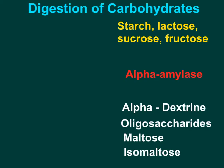In this video I will be explaining some important points about digestion of carbohydrates. Carbohydrate digestion begins in the mouth. The main carbohydrates in our diet are starch, which is a polysaccharide from plant sources, lactose from milk and milk products, sucrose from table sugar, and fructose from high fructose corn syrup.